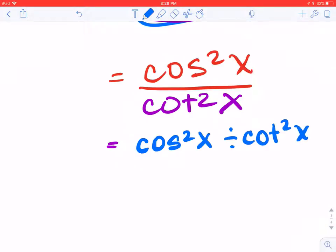Now I realize that cotangent squared can be substituted in for cosine squared over sine squared. So now I have cosine squared of x divided by cosine squared of x over sine squared of x.